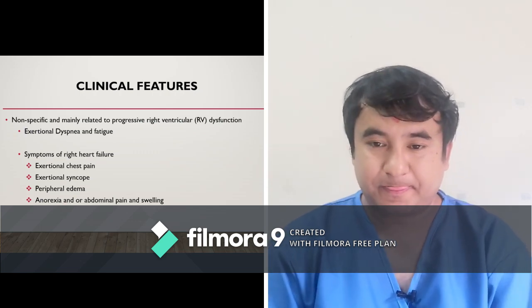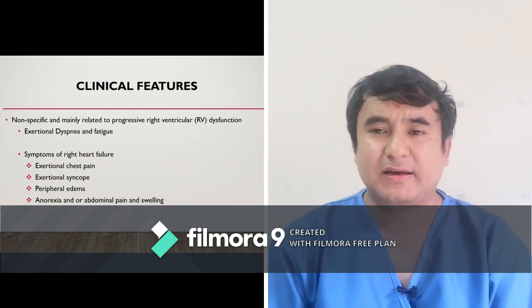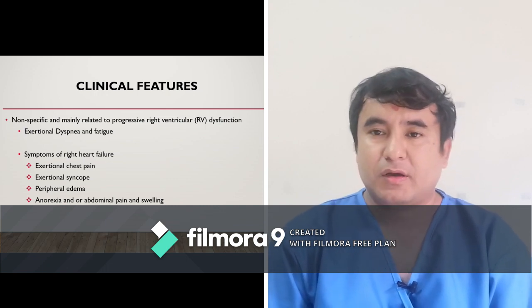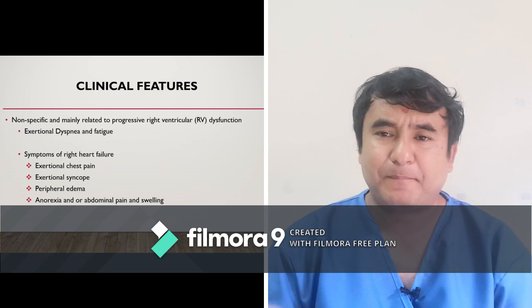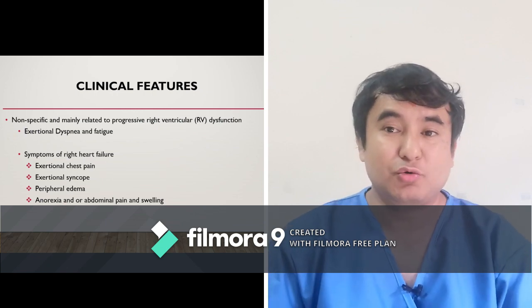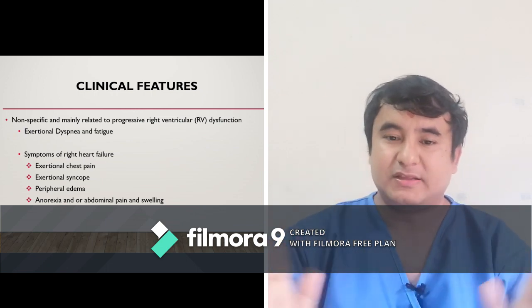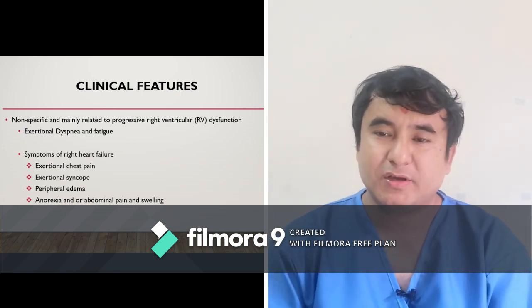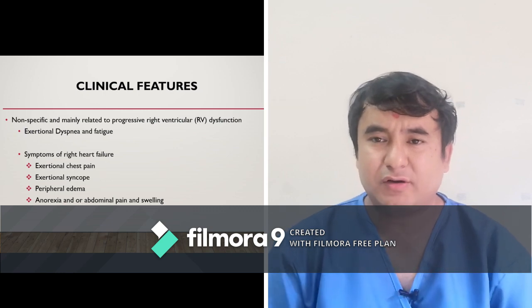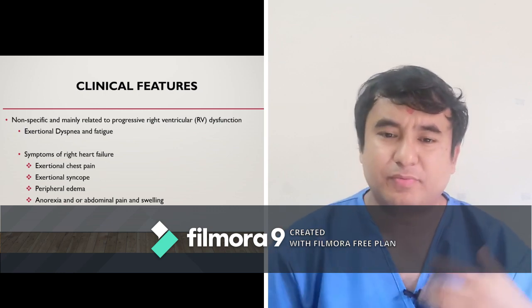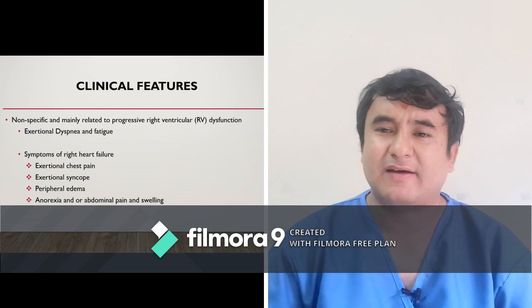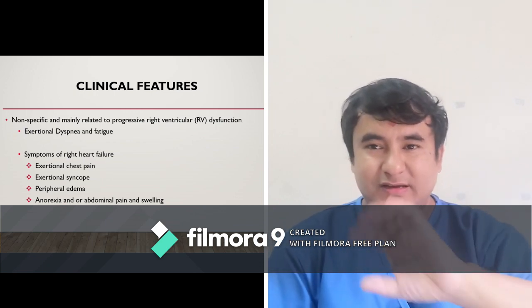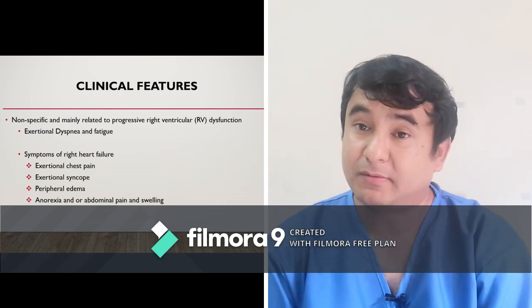What are the clinical features? Some patients may be completely asymptomatic — when they undergo echocardiography, features of pulmonary artery hypertension are detected incidentally. Some patients, if you take a careful history, will say they have shortness of breath on exertion and fatigability — this is the second category of patient with just exertional shortness of breath and fatigability.